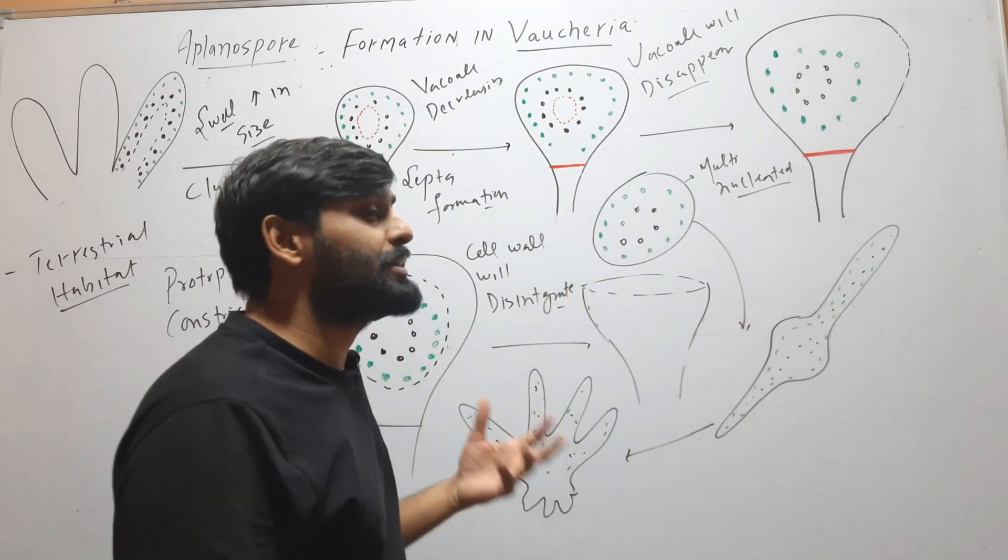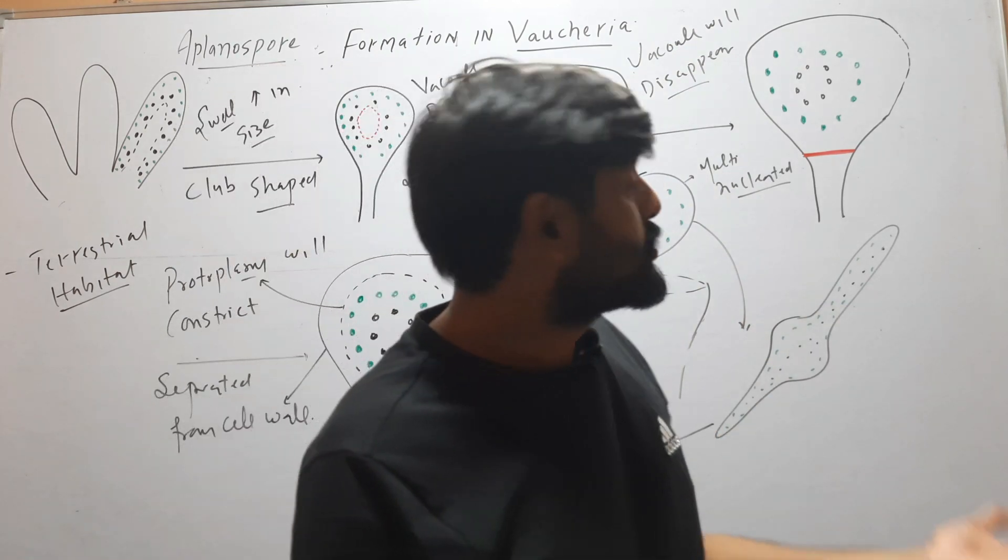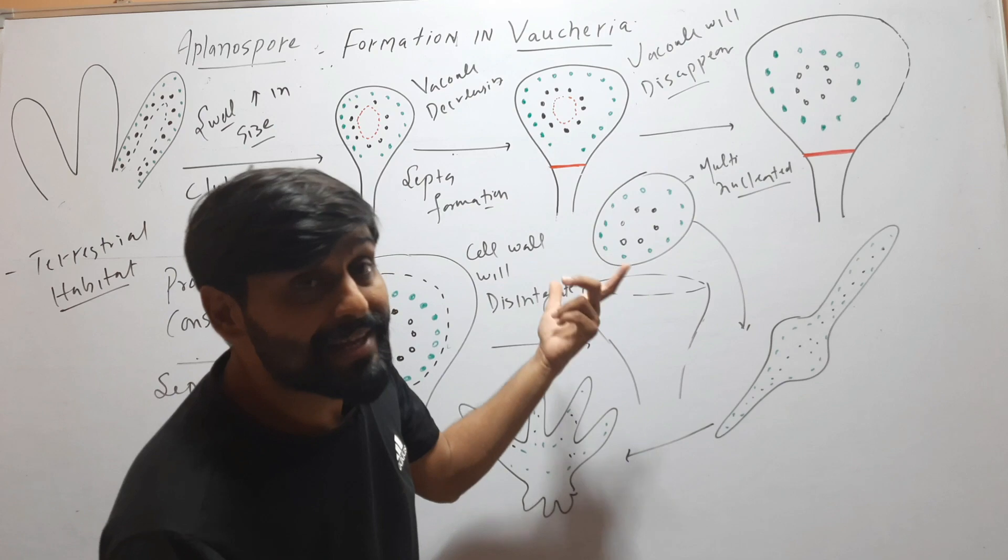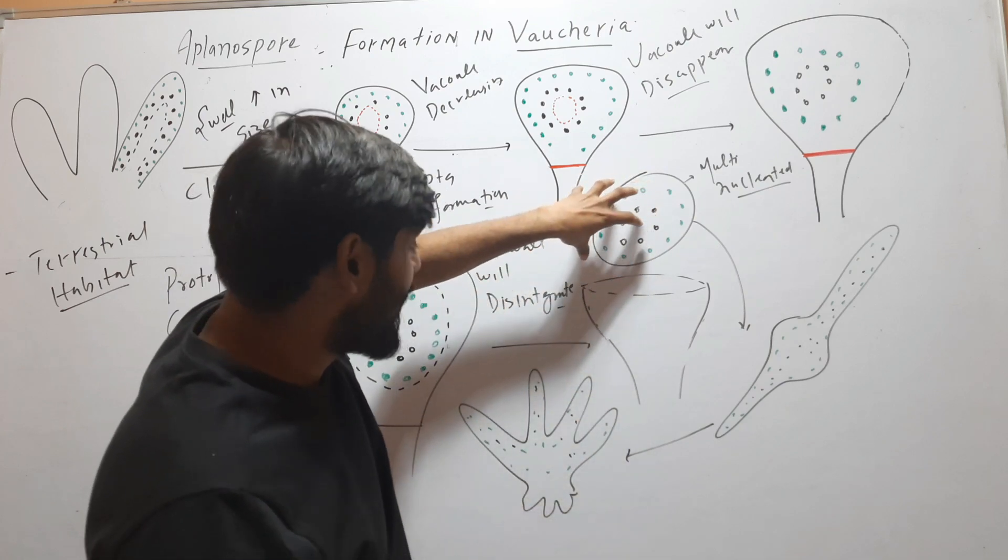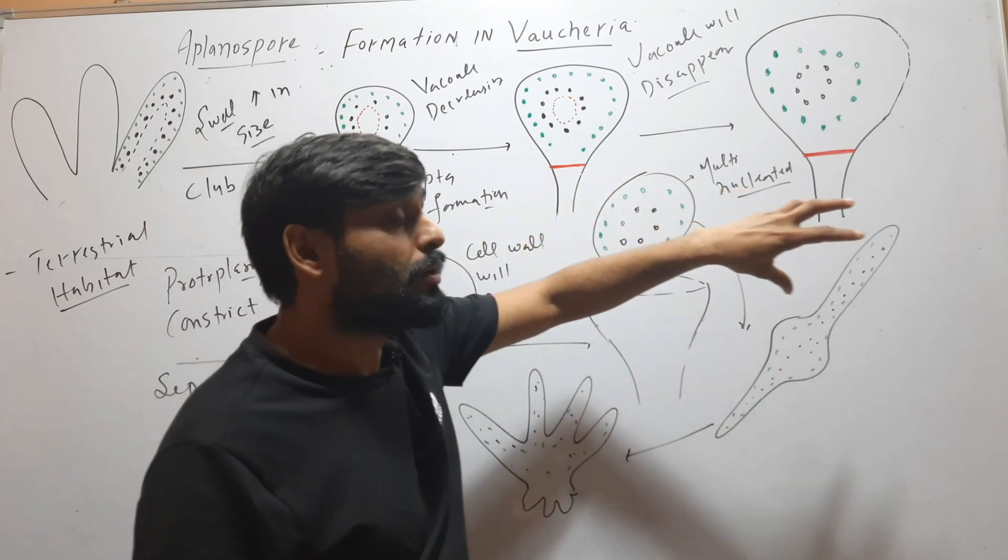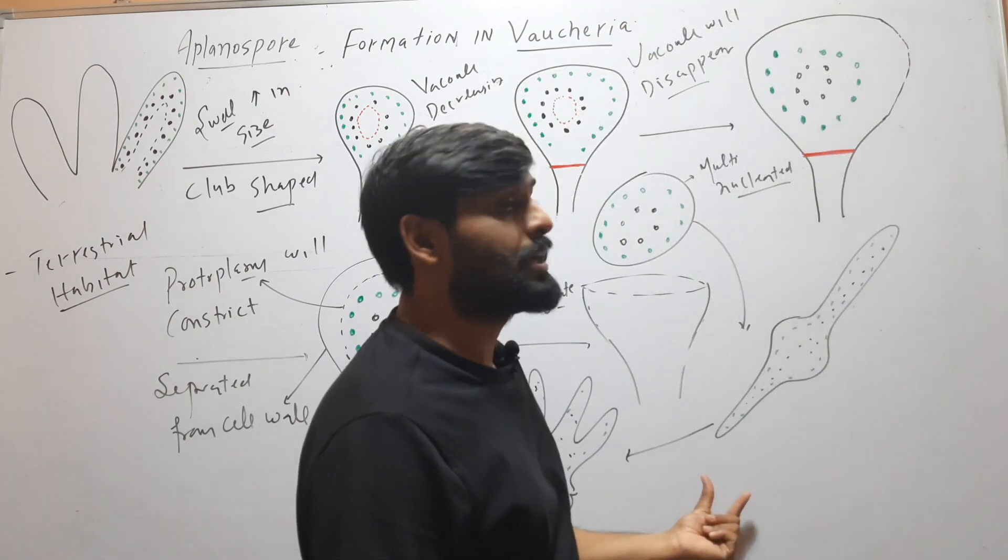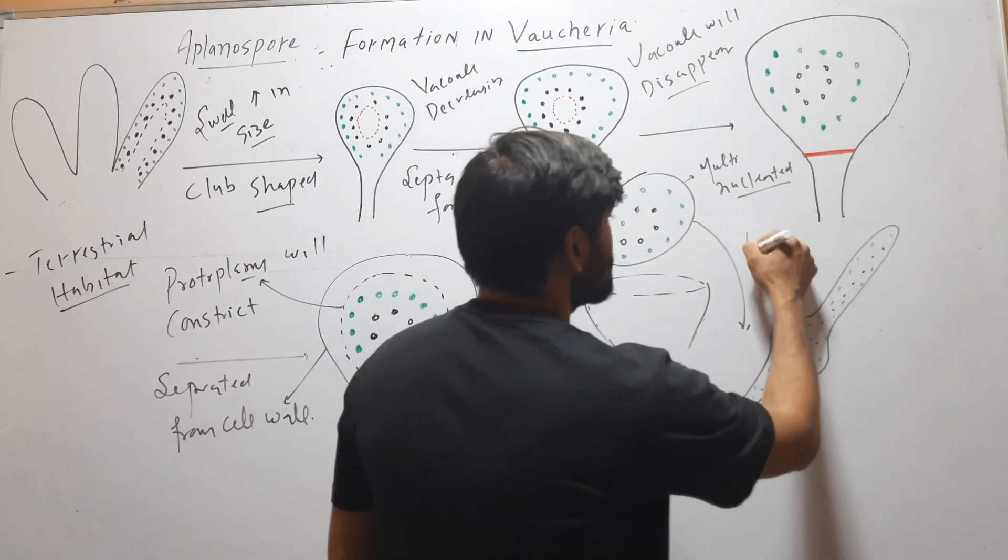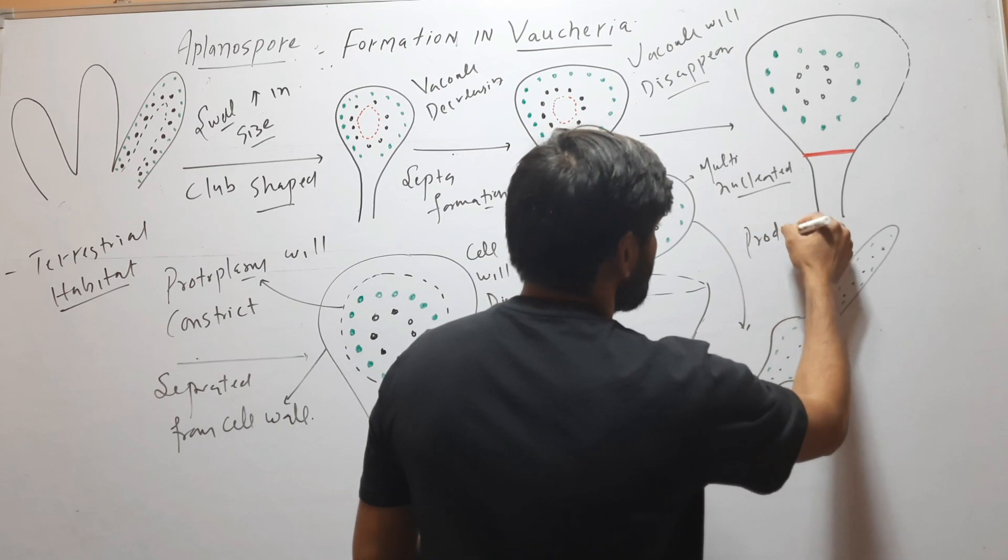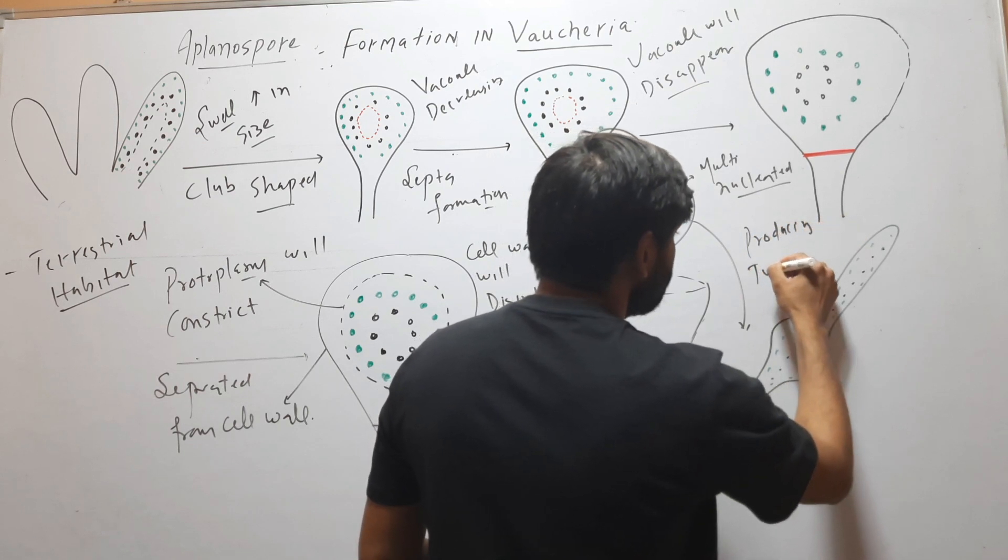Because this spore is formed in Vaucheria which have terrestrial habitat, in case of terrestrial habitat there is no use of flagella, so flagella is absent here. It will come out and on returning to favorable conditions it will germinate by producing two filaments.